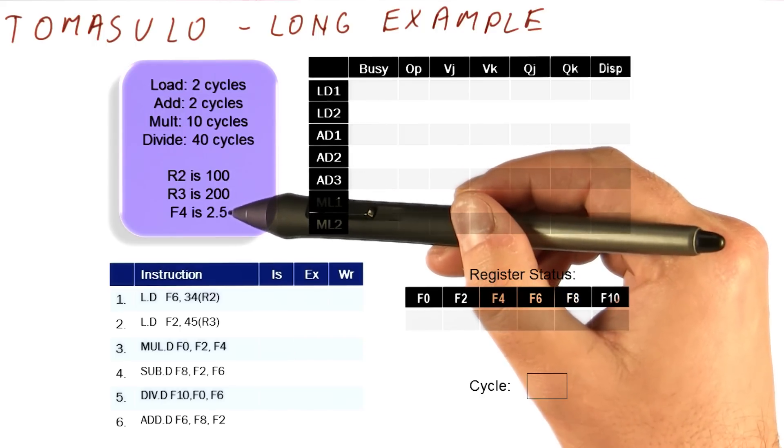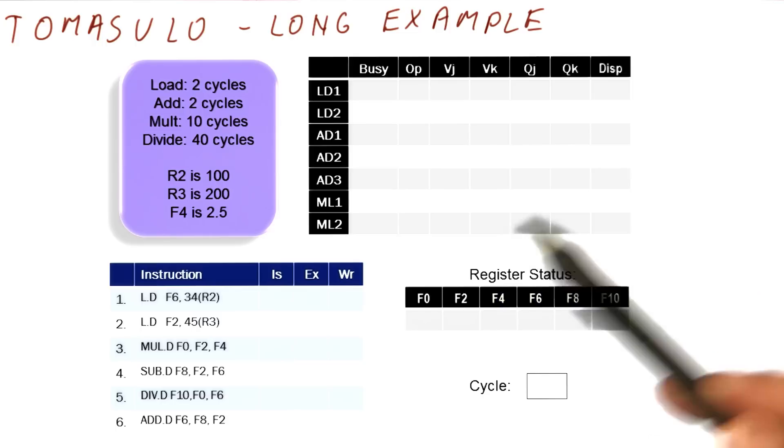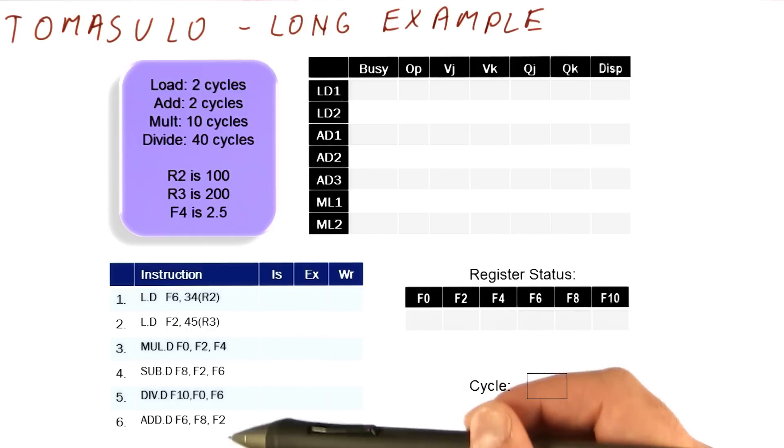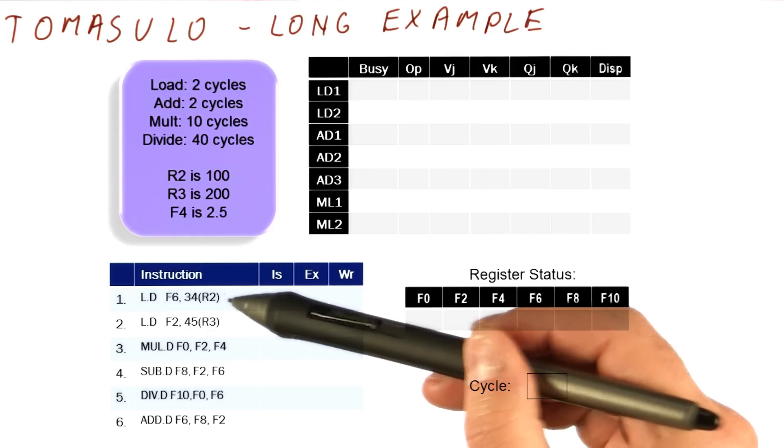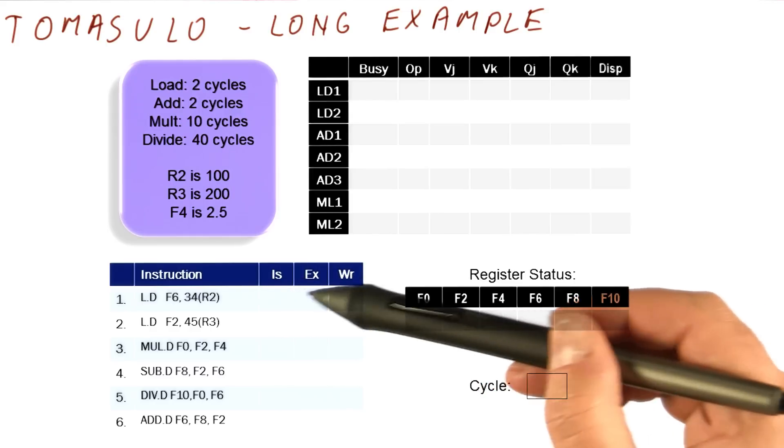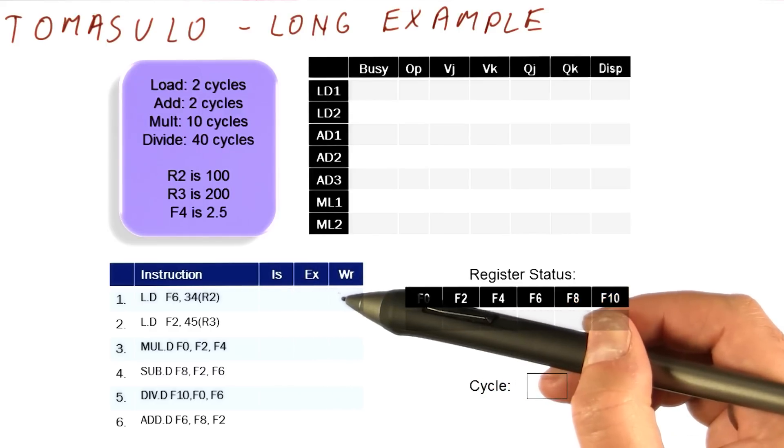And the initial content of R2, R3, and R4 are like this. This is the table that gives us our instructions in order. So this is the very first instruction. Here we will note in which cycle which instruction issues, begins execution, and writes the result.